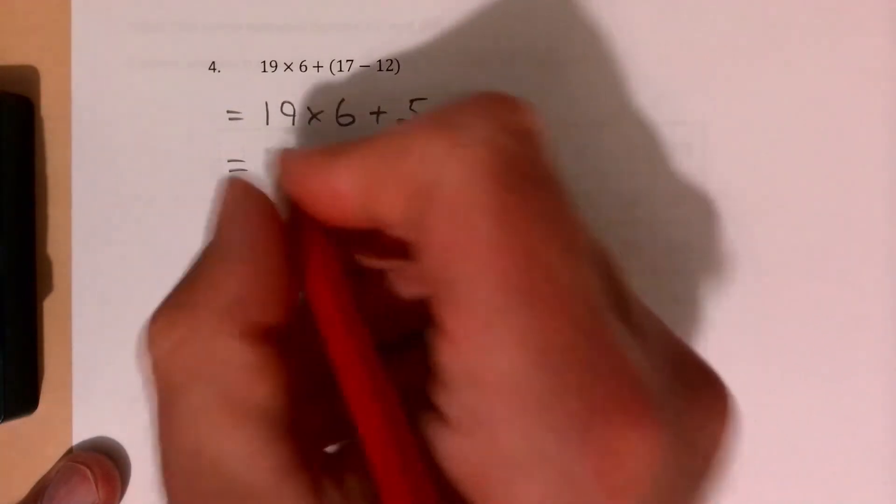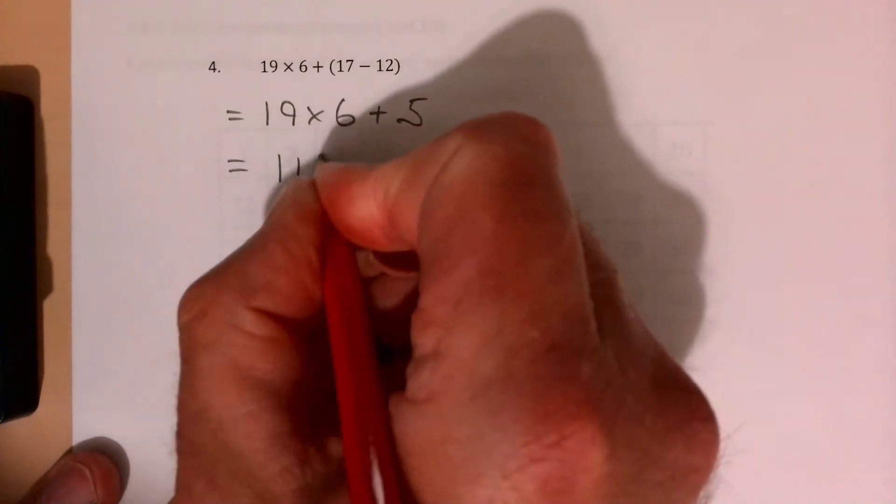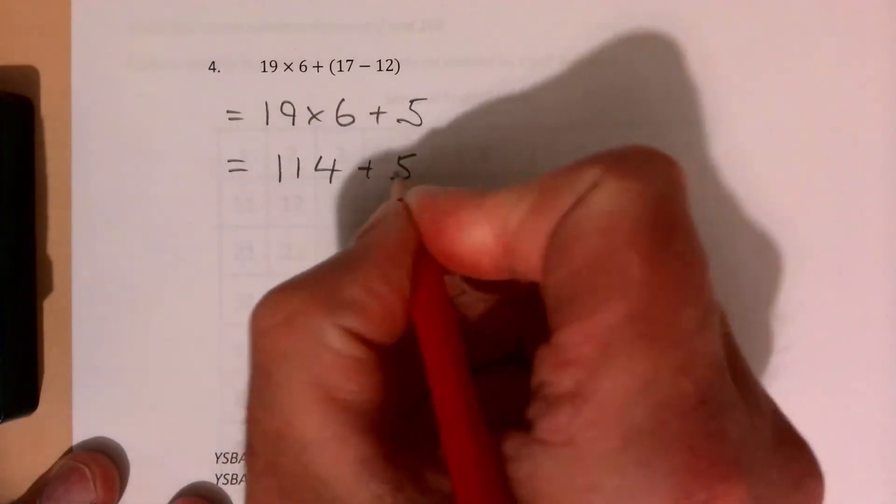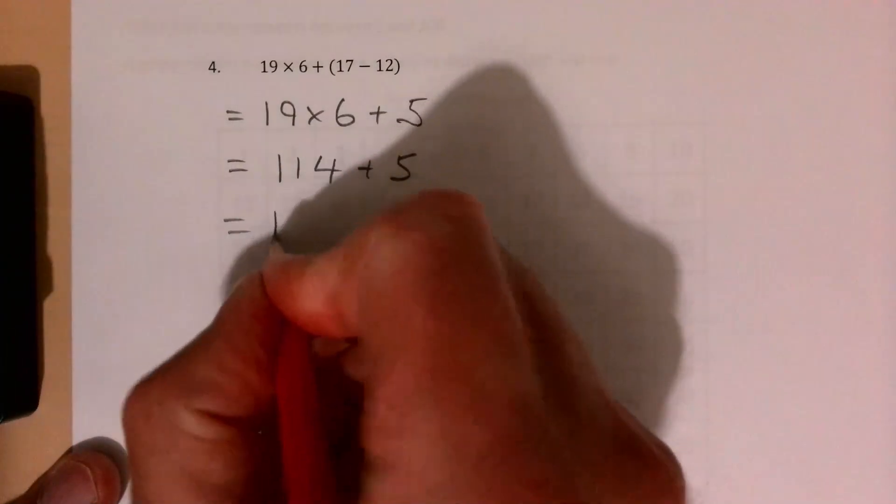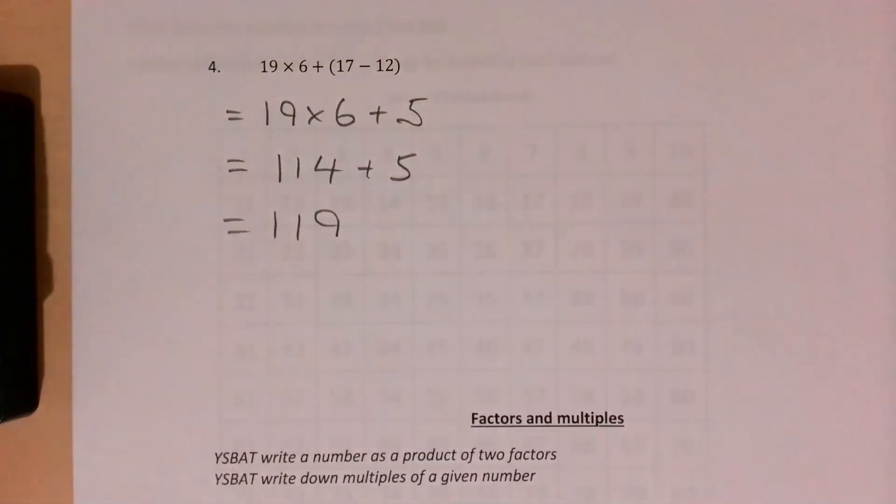19 times 6 is going to give me 114. You have to do the multiplication first. Plus 5. 114 plus 5 is of course 119.